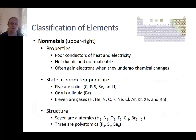Non-metals are in the upper right corner of the periodic table. In contrast to the metals, these are generally poor conductors of heat and electricity, they are not ductile or malleable, and they typically gain electrons when they undergo chemical changes. At room temperature, five of the non-metals are solid, one is a liquid, and eleven are gases. Seven of these metals are diatomics, which means that their base unit has two atoms, and three are polyatomic, meaning their base unit has more than two atoms (phosphorus, sulfur, and selenium). All the others are monoatomic like the metals.